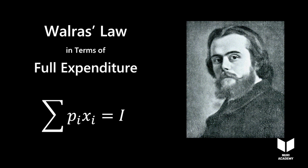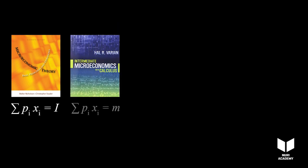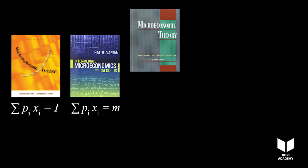Walras' Law appears in all reputable textbooks but with different symbols. Nicholson & Snyder, an undergraduate textbook, uses I for income. Varian, another undergraduate textbook, uses M for money.